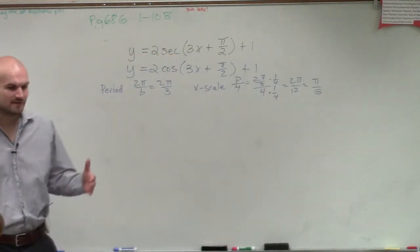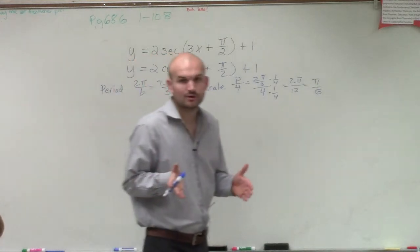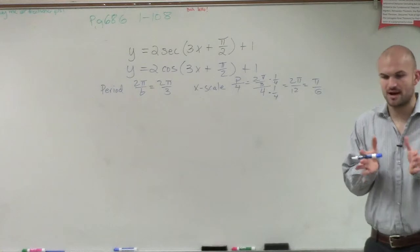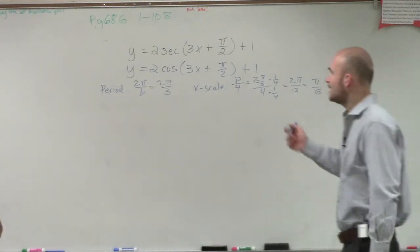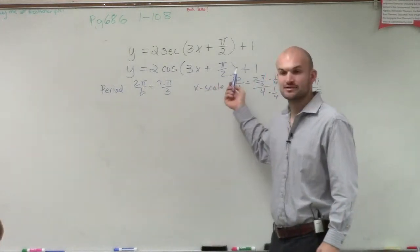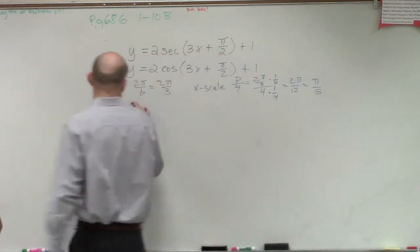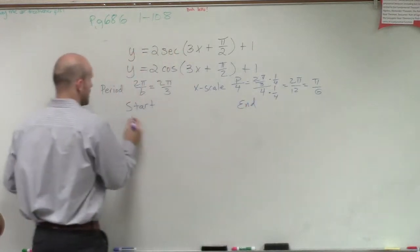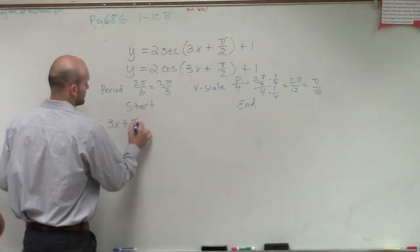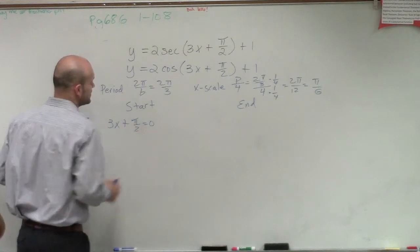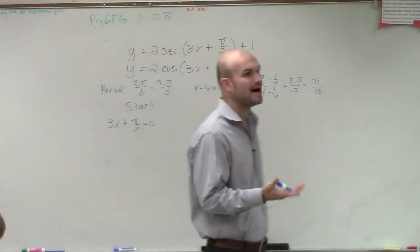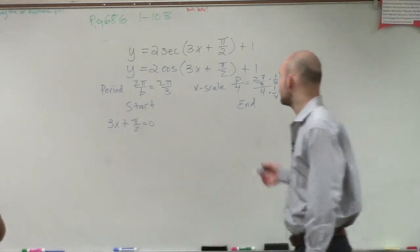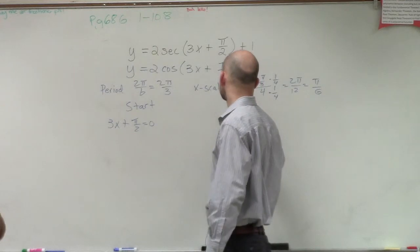The next thing is we want to determine our phase shift — where we're going to start and where we're going to end. When we looked at a graph, we had a starting point and an ending point, and that was really important when we had transformations within the function. So I'll find the start by setting what's inside my function equal to 0, and the end by setting it equal to 2π.